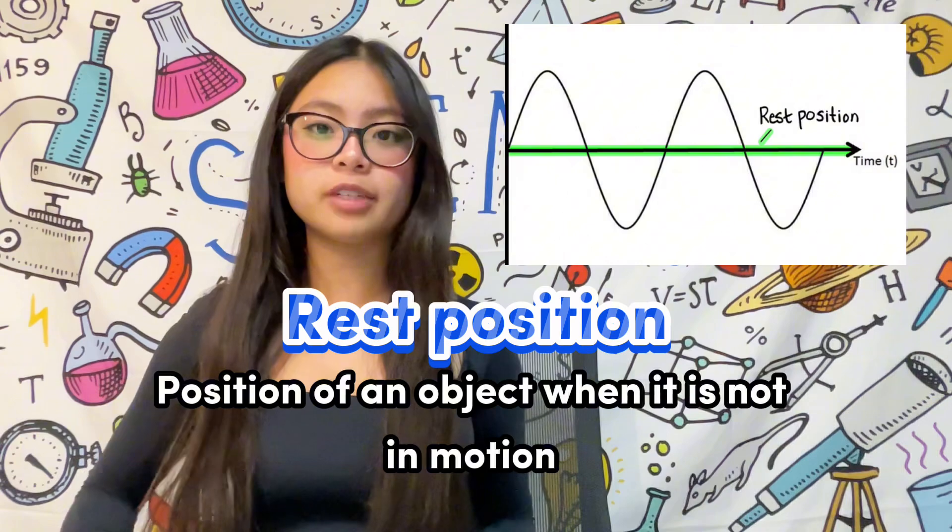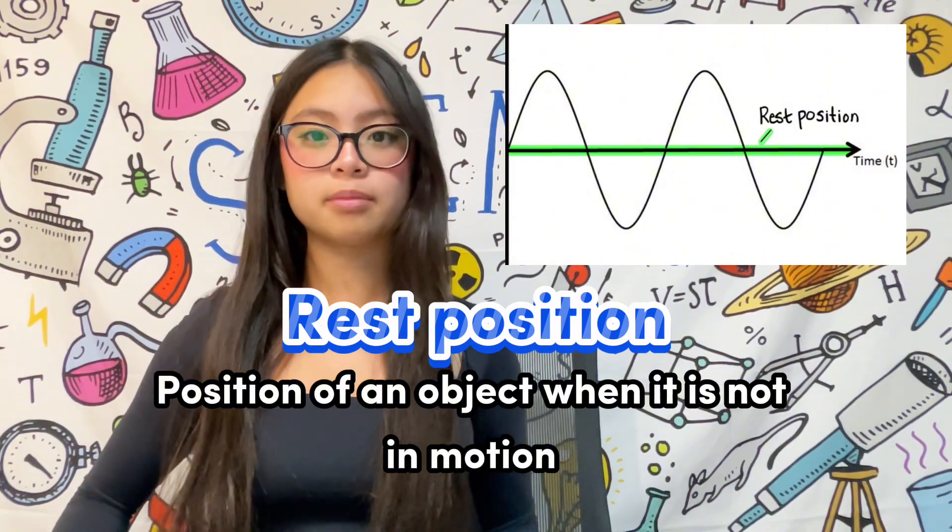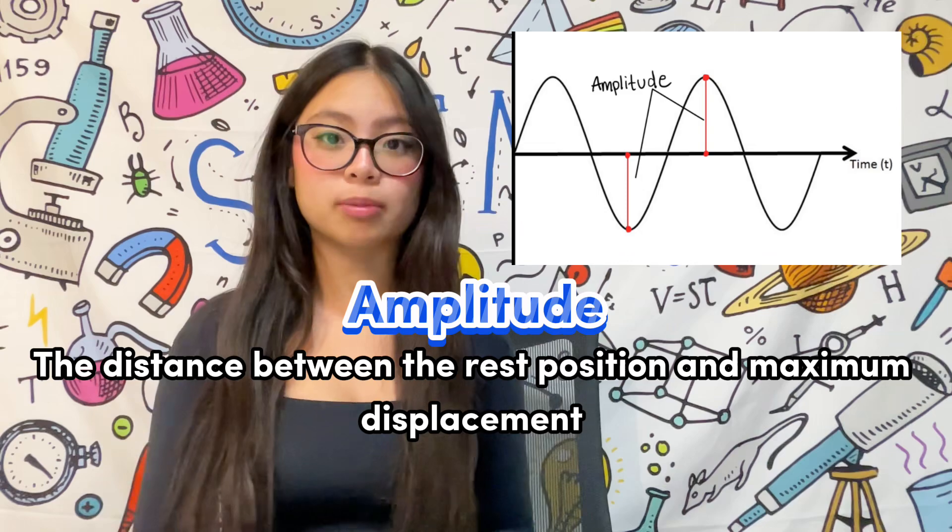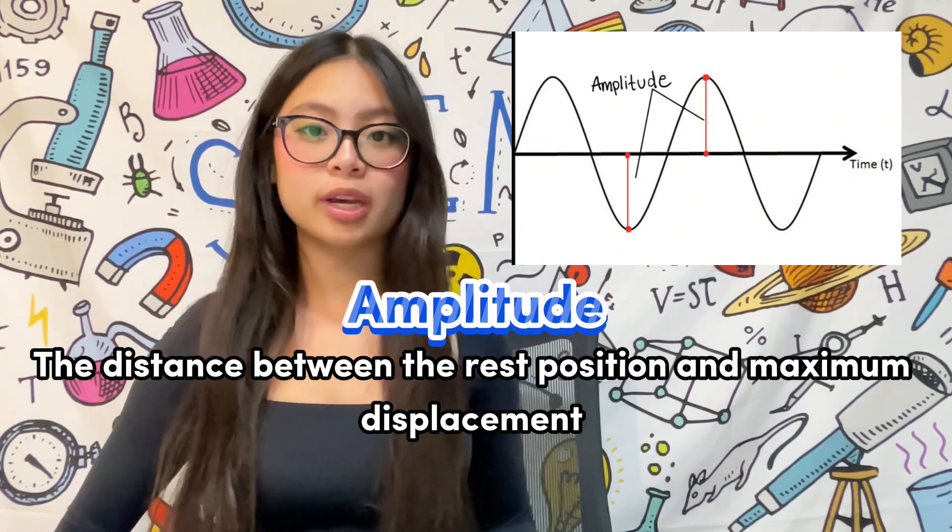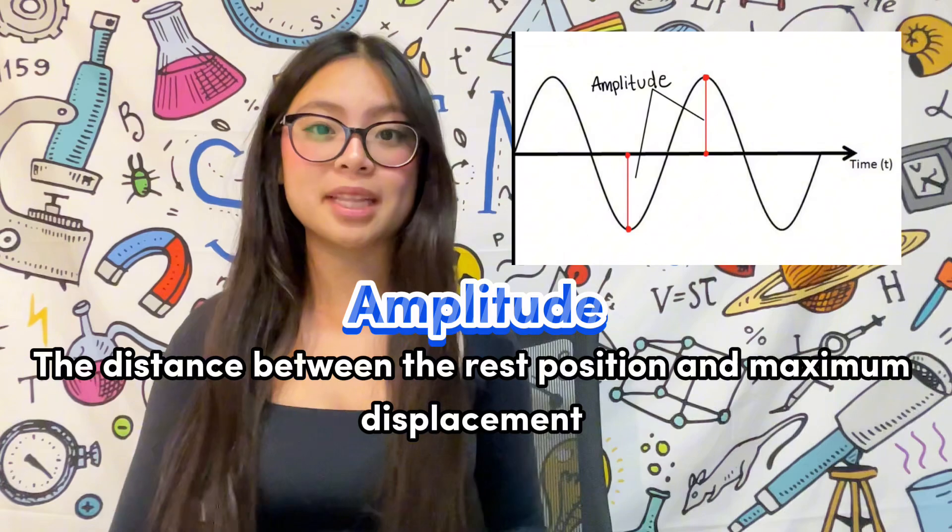Rest position is the position of an object when it is not in motion. When the object is in motion, the shortest distance between the rest position and the maximum displacement is known as amplitude. Amplitude is represented by the letter A.